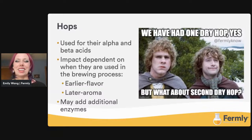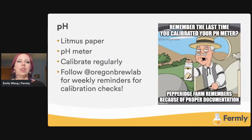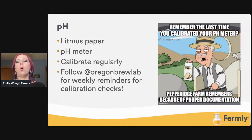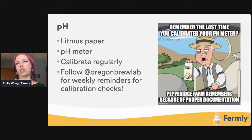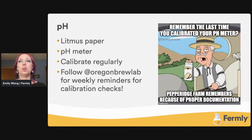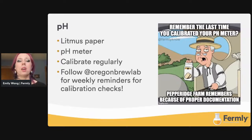From here, we're going to move on to testing and testing accessories. For pH, we usually use litmus paper — it changes color, but it's kind of subjective because color perception varies person to person. So it's not the best, but it works in a pinch. You can get a pH meter — wonderful little things. I do want to point out that you should calibrate it regularly using different buffer solutions. We highly recommend calibrating on a weekly basis. My friend Dana at Oregon Brew Lab always puts out a reminder to calibrate your pH meter on Fridays.